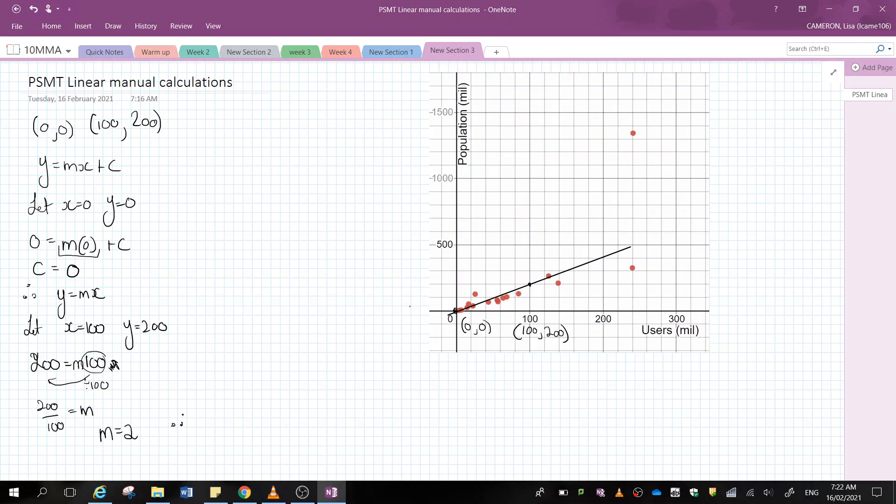Therefore, the equation of this line here is going to be pretty close to y equals 2x. Now, if I wanted to use this to make predictions, I could. If I was given the users, I could predict the population of a country. If I was given the population of a country, I could rearrange this to predict how many users there will be.